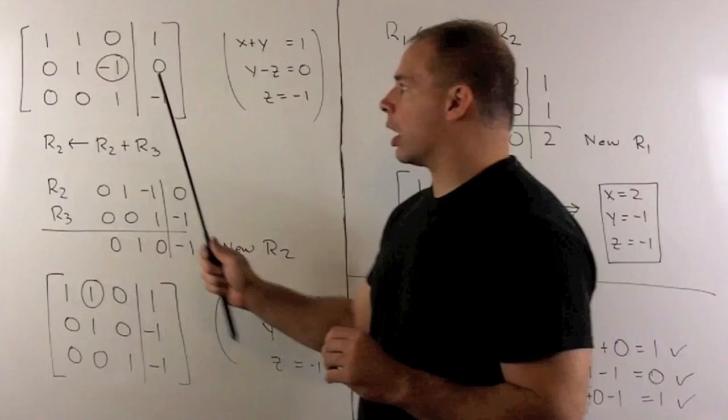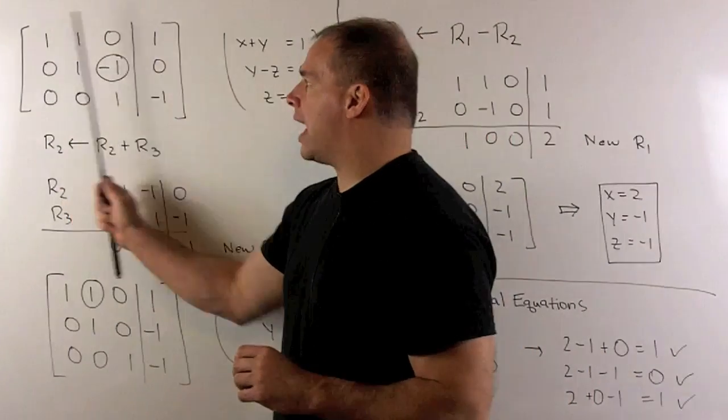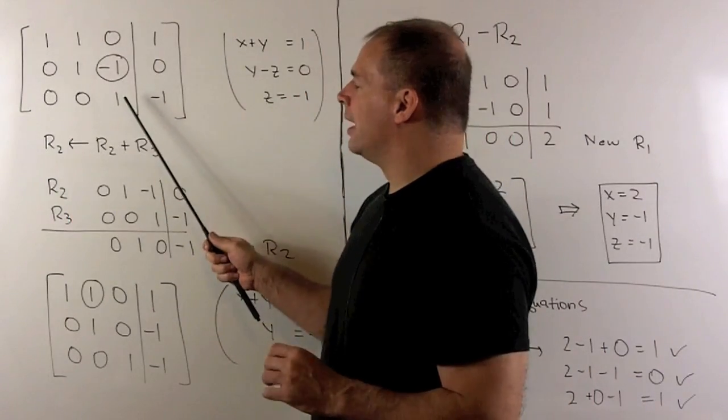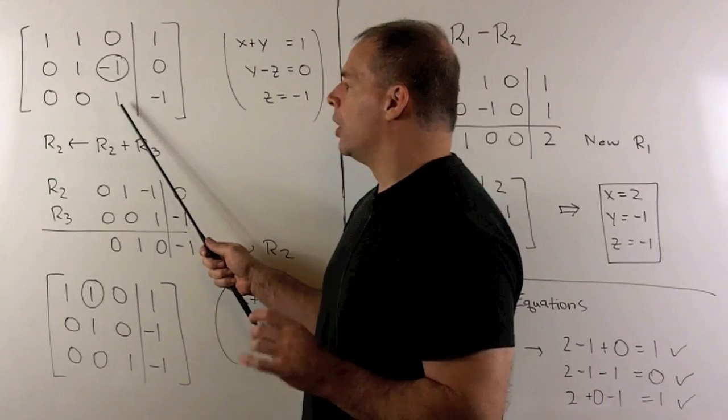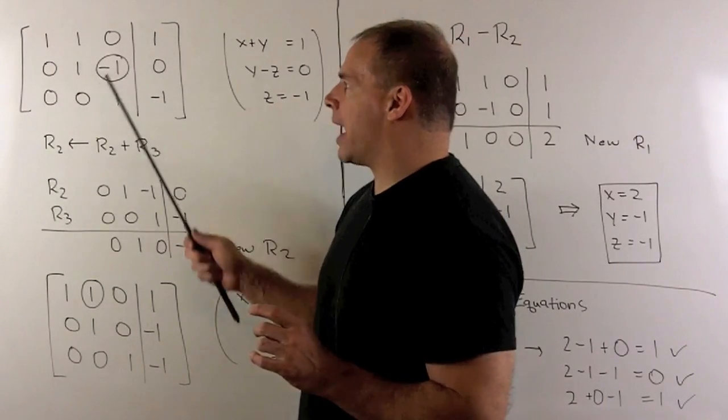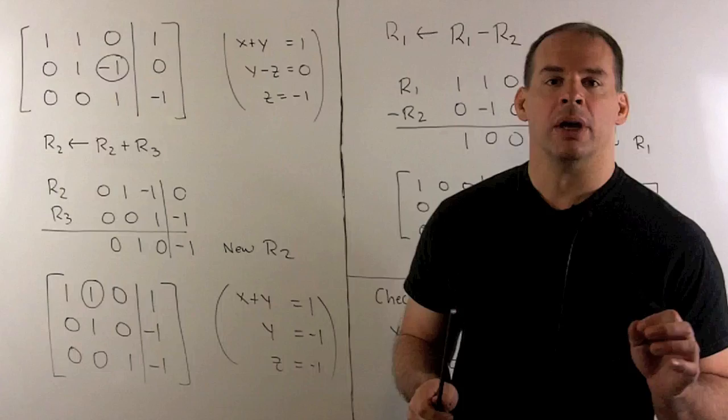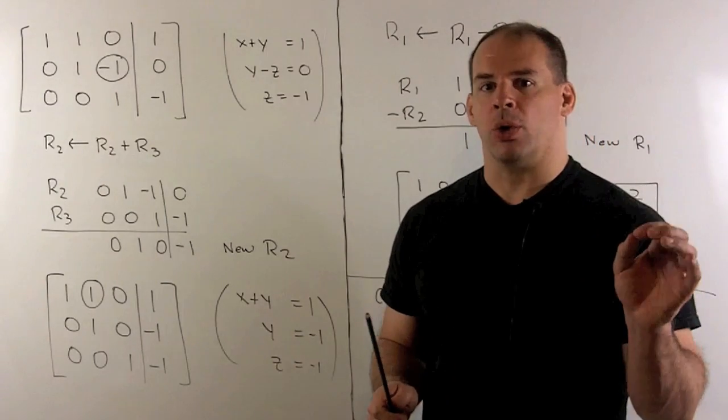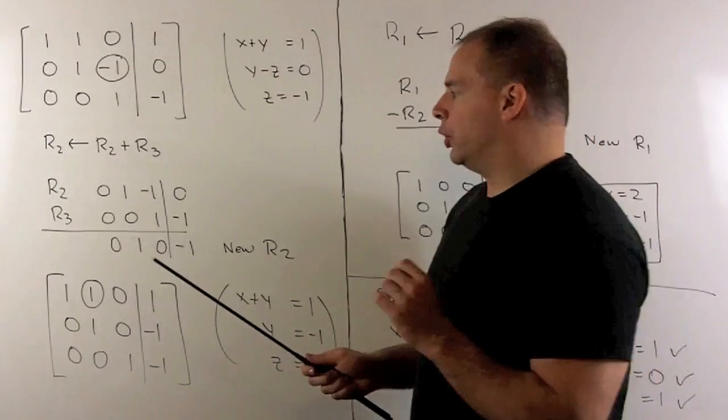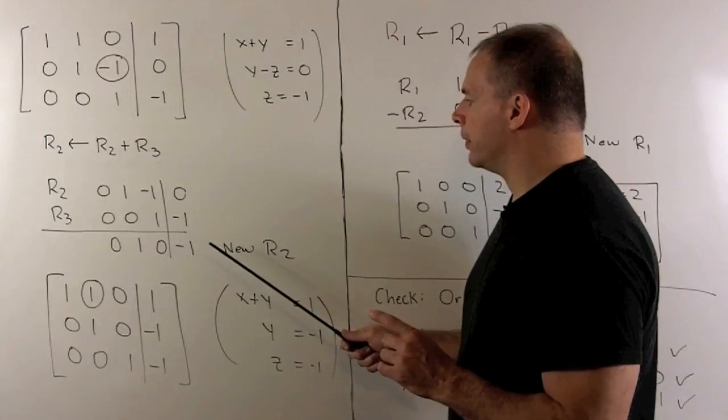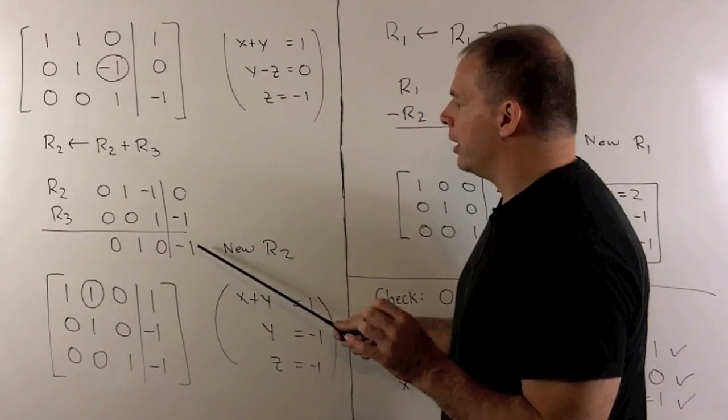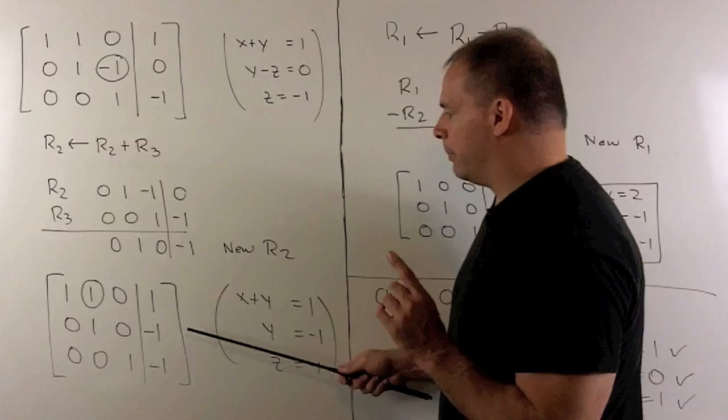So same idea as before. We're going to ignore the first two columns and the last column. How do I turn this minus 1 into 0 using this one? Well, I'm just going to add this 1 to our minus 1 to get 0. So to take row 3, add it to row 2, we get our new row 2. So we do our work. We get our new row 2. And then we get this new augmented matrix.